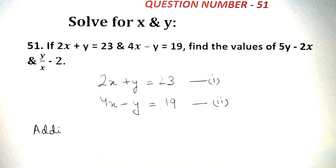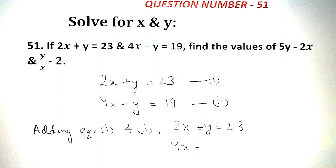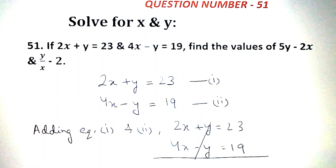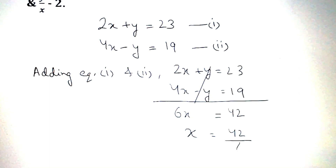Adding equation 1 and 2: 2x plus y is equal to 23, and 4x minus y is equal to 19. Adding them, plus y and minus y will cancel. Then we have 6x is equal to 42, that is x is equal to 42 by 6, that is 7.